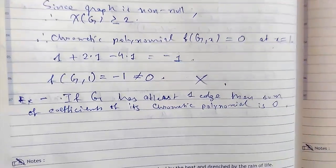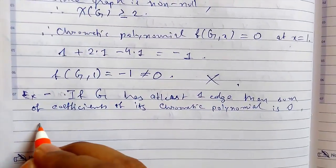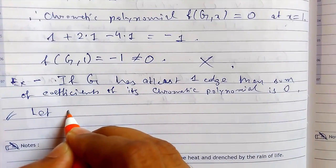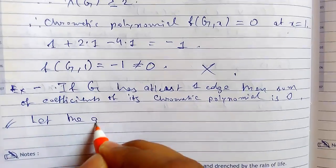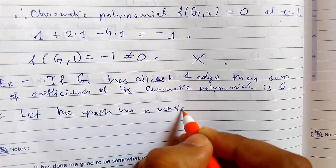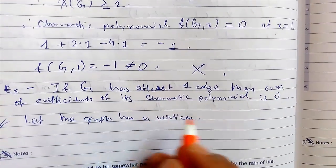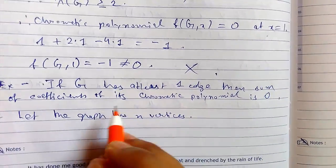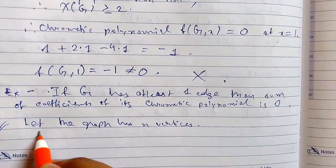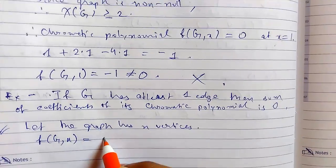So we need to prove it. So for that, let us start. So let the graph has n vertices, 1 edge. So for chromatic polynomial here for non-null graph will be given as f that is equals to...